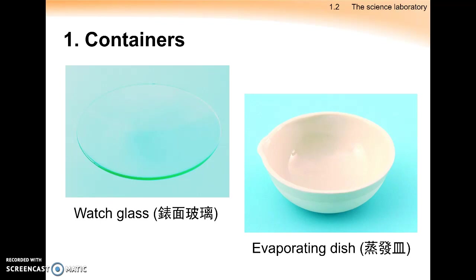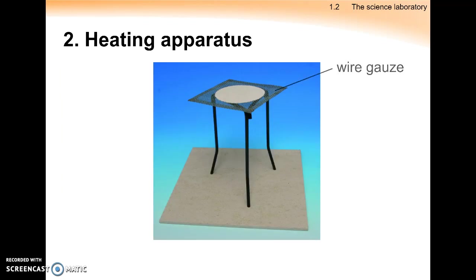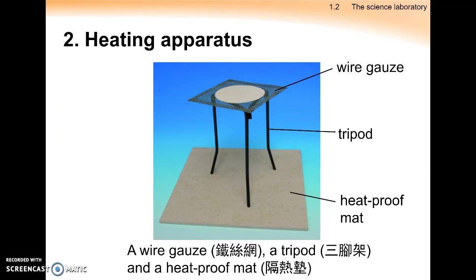The watch glass and evaporating dish are both responsible for letting small amounts of liquid evaporate on them upon heating. The liquid contained on these two types of containers can be evaporated and the solid will be left behind.